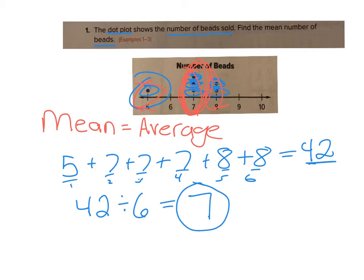A couple times it was more than seven, once it was lower, so the average is about seven. You just take all the points, add up all those individual numbers, and divide by the count of numbers you had.